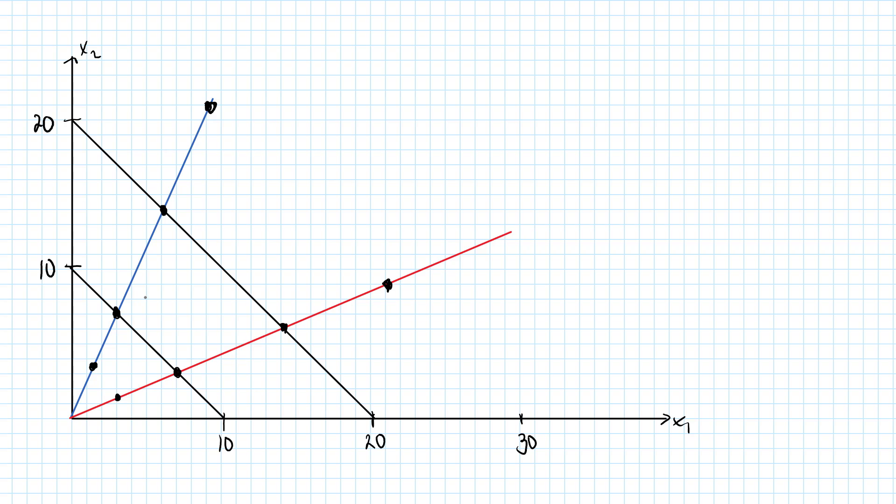I have picked two bundles on the indifference curve arbitrarily. Let's say that this is my x bundle and this is my y bundle. The x bundle is something like 3,7 and the y bundle something like 7,3.